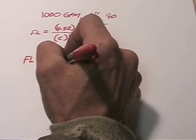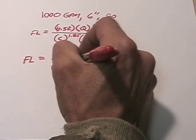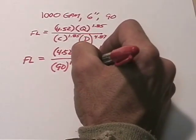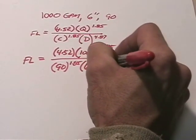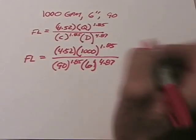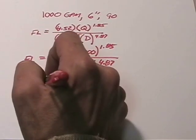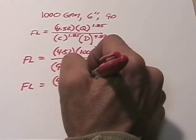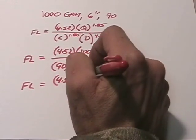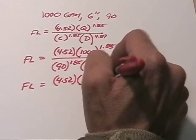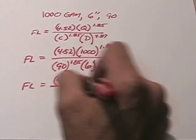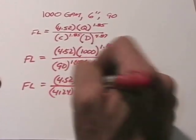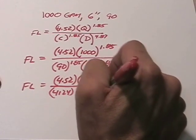Our C factor of 90, raised to 1.85, times the diameter of the pipe, which is 6 inches, raised to 4.87. So our friction loss equals 4.52 times 354.813 divided by 4,124 times 61.60.